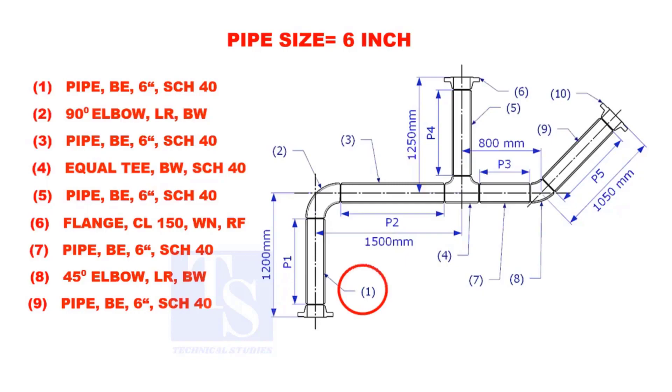Let us calculate the length of pipe 1. To calculate the length of pipe 1, we need to reduce the flange height and the elbow center from the measurement 1200mm.